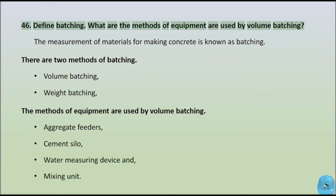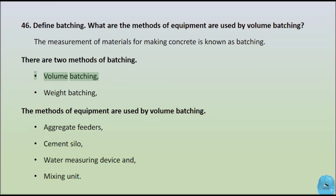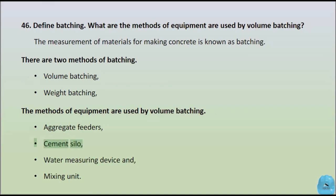Define batching. What are the methods of equipment used for volume batching? Batching is the measurement of materials for making concrete. There are two methods of batching: volume batching and weight batching. The methods of equipment used for volume batching are: aggregate feeders, cement silo, water measuring device, and mixing unit.